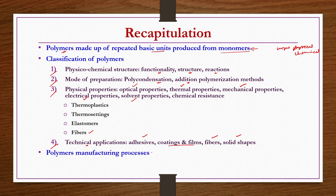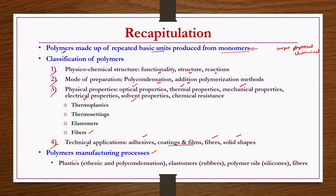We discussed polymer manufacturing processes where we have plastics, elastomers, polymer oils, and fibers as four categories. Under plastics, ethenic polymers and condensation polymers are the two types. Elastomers include most rubbers; most silicones or oils come under polymer oils; and most fibers like thread would be counted under fibers.